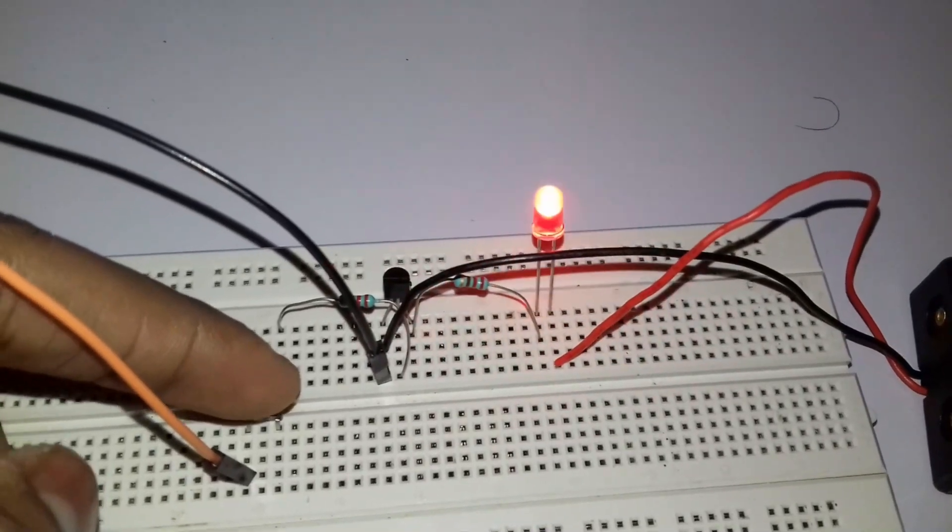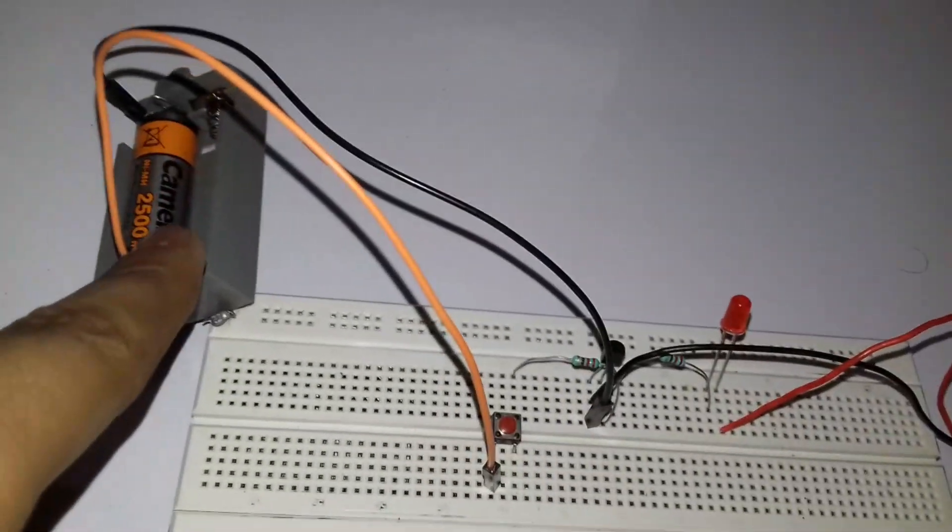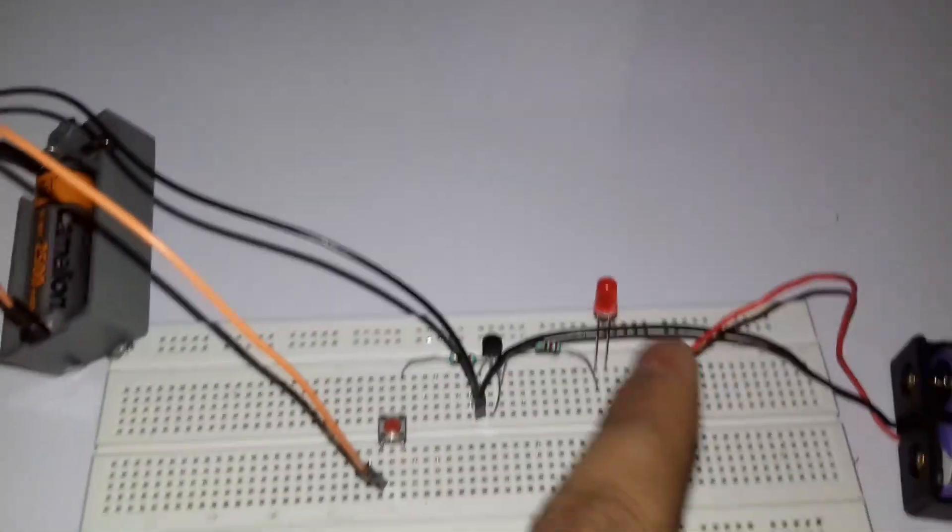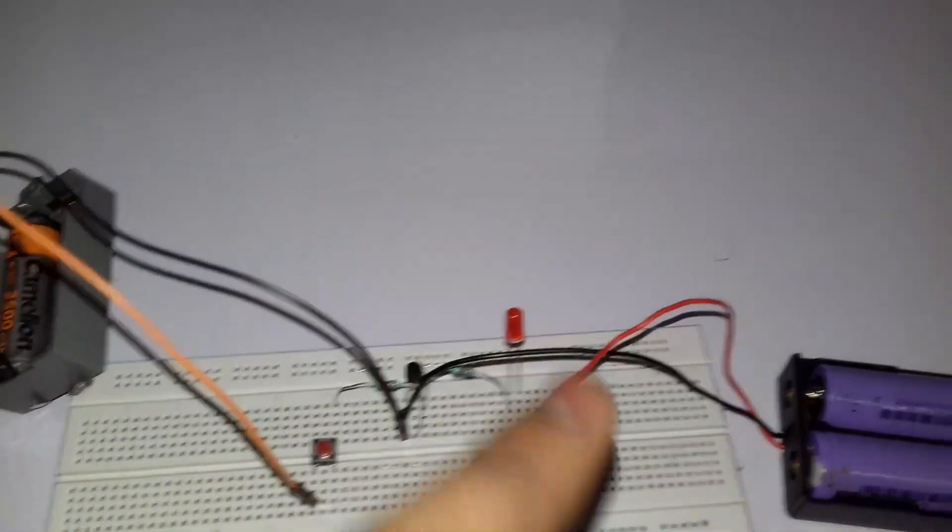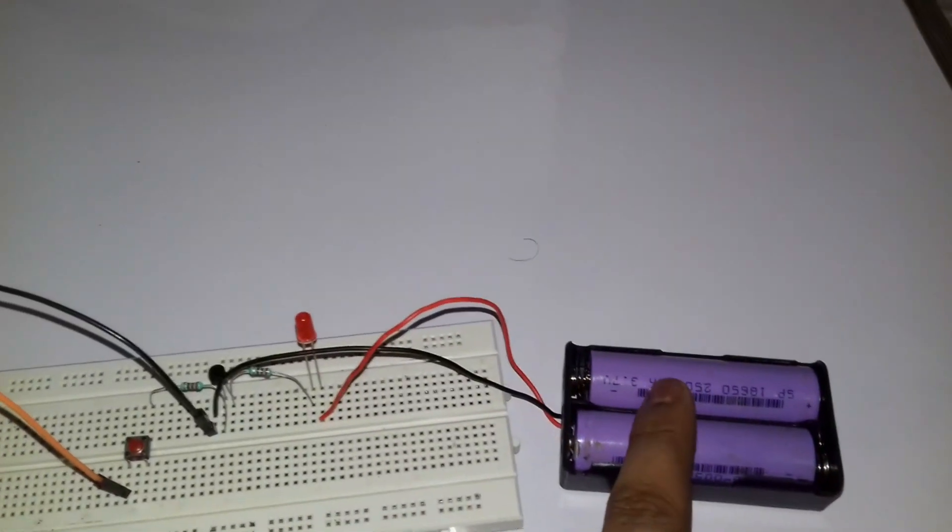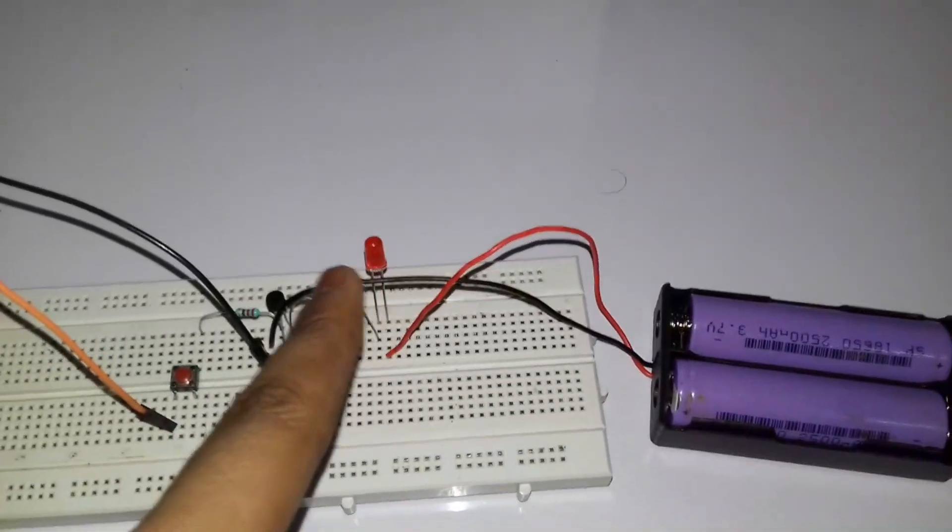So now if I press this switch, the LED can glow. But if I had connected only this LED and switch with this 1.2 volt, the LED will not glow because 1.2 volt is not sufficient to glow this LED. And again if I had used this source with the LED and only a switch, then it would fry the LED.